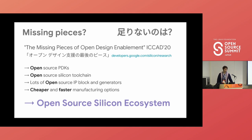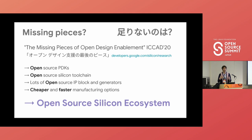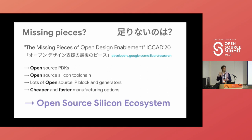The last missing piece is cheaper and faster manufacturing options. When you want to manufacture custom silicon, it takes a month or multiple months and often costs hundreds of thousands of dollars — it's not accessible to a hobbyist or a student. We want to democratize that and make it easy for anyone to get started manufacturing custom silicon. We think that if we have those four pieces, there will be an open source silicon ecosystem similar to software, where people who know very little about design and people who know a lot can collaborate and build things together.